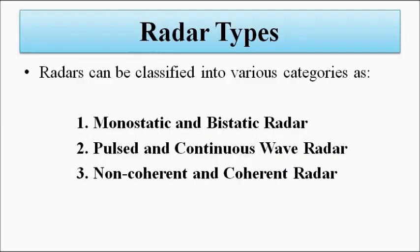Radars can also be classified in other ways, categories such as monostatic and bi-static radar, non-coherent and coherent radar, and pulsed and continuous wave radar, which is the most basic classification. We did not previously discuss monostatic, bi-static, and non-coherent/coherent, and only briefly discussed pulsed and continuous wave radar. In this video we are going to discuss these classifications in detail.